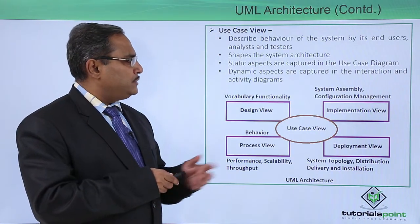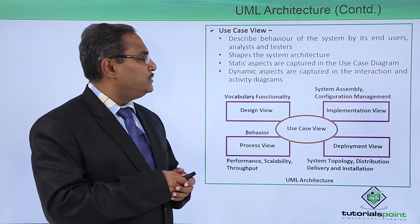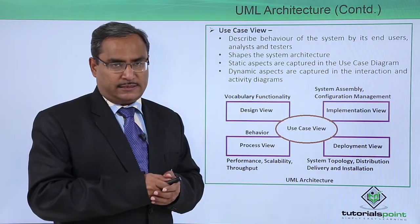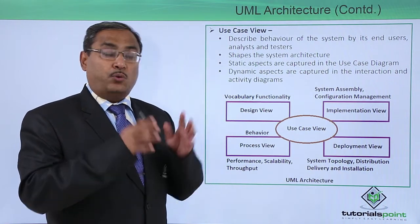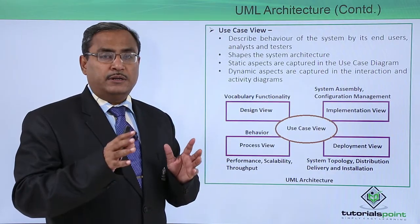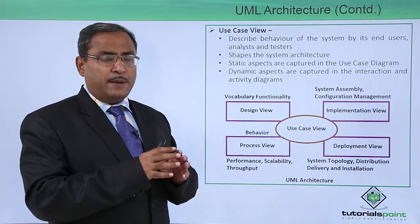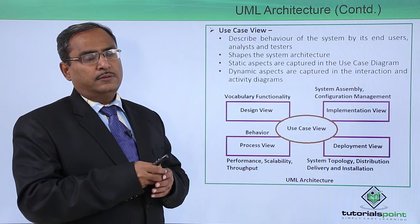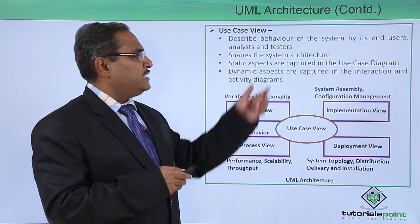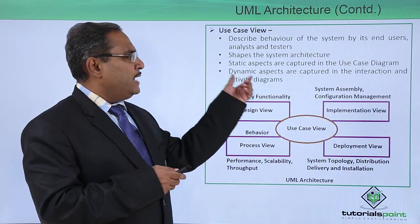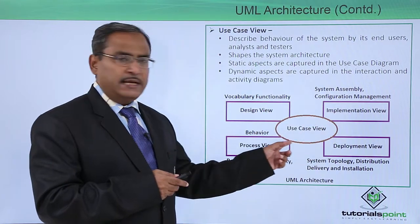First, we are going for the Use Case View. It describes the behavior of the system by its end users, analysts, and testers. Before drawing the use case diagram, we should gather all the requirements. Once the requirements list is refined and finalized, the use case diagram will be prepared. Static aspects are captured in the use case diagram, and dynamic aspects are captured in the interaction and activity diagrams.